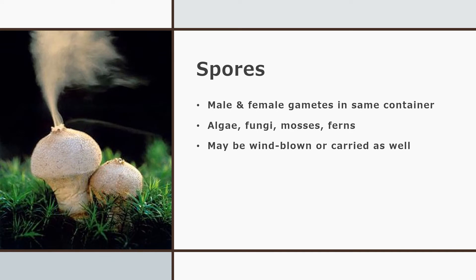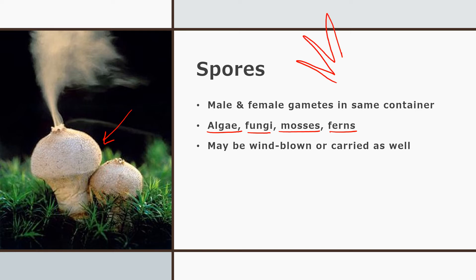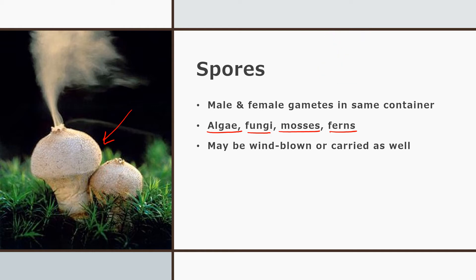Spores are where you have the male and female gametes all in that same tough exterior shell — some sperm, some eggs, a tough shell — spewed out into the world. It lands where it lands, and when conditions are right, that shell will break down, the gametes will combine, and you'll have a new creature. Algae, fungi, mosses, and ferns do this. If you look at the underside of a fern, you'll often see little circles — those make spores.